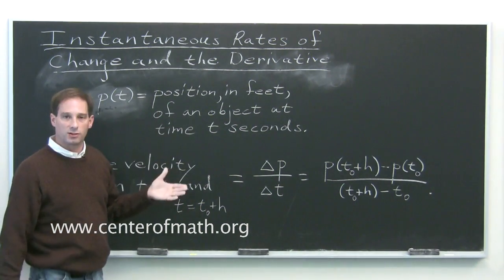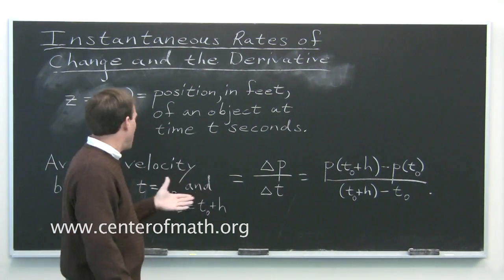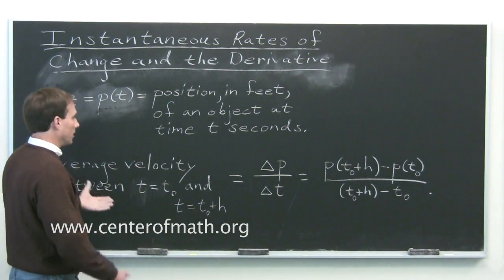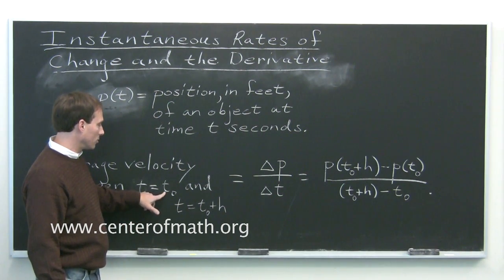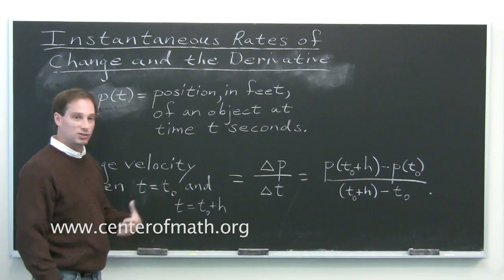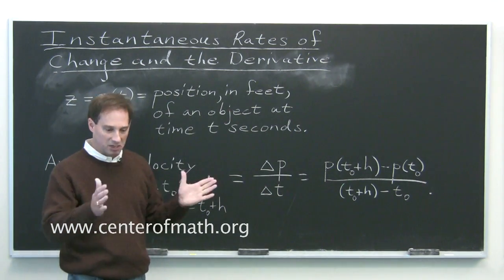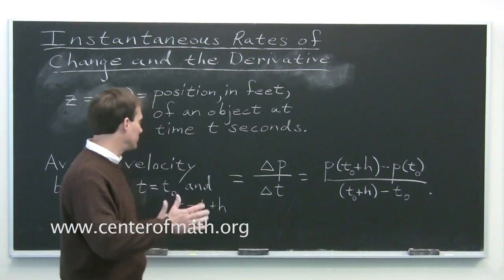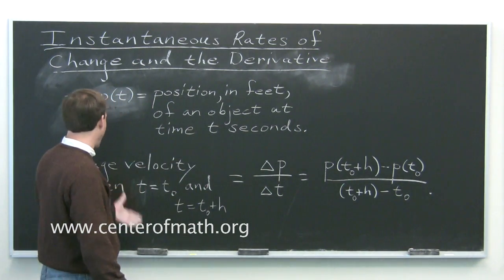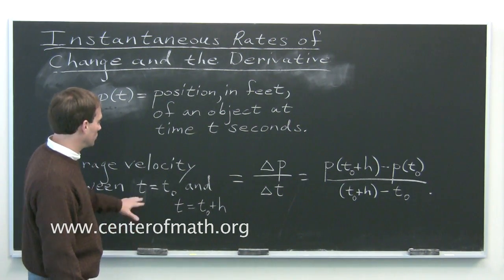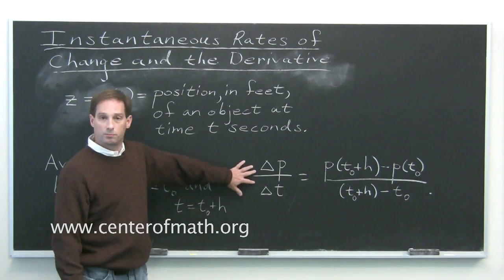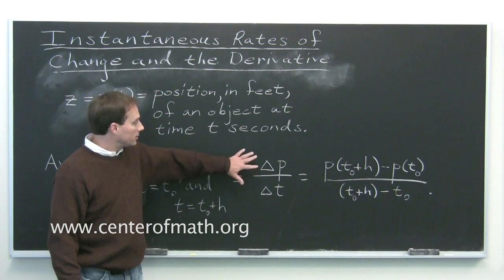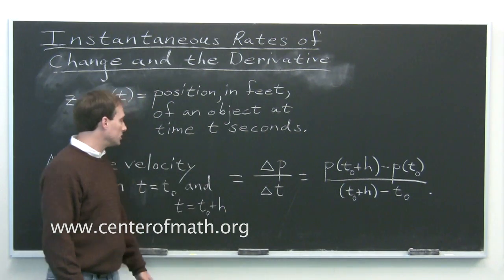If you've got the position as a function of time, what's the average velocity of the object between two times, which I've called t₀, t sub zero, and t₀ plus h? Think of h as some fairly small interval of time that's gone by. What's the average velocity of an object between two times, t₀ and t₀ plus h? Well, you should have looked at this before.